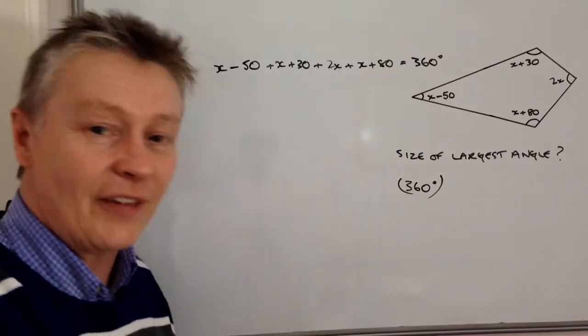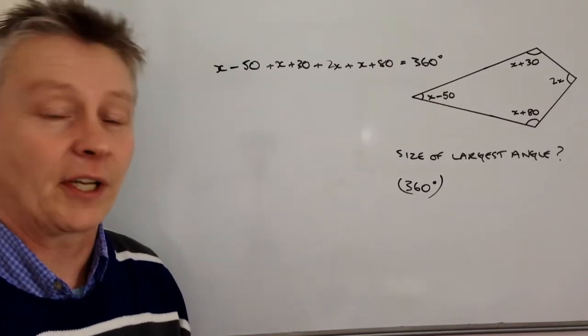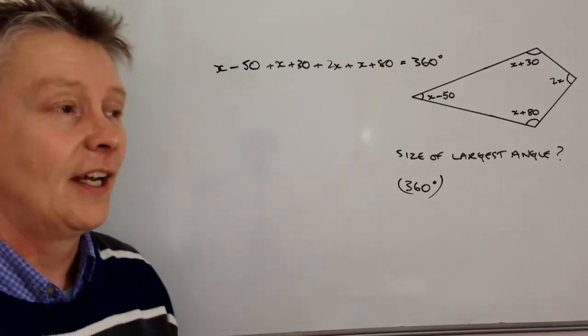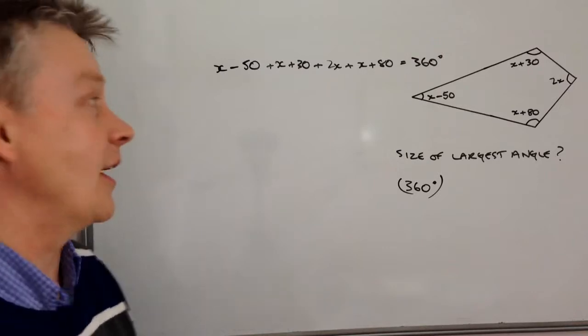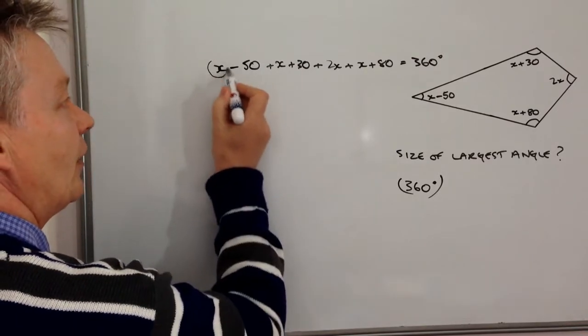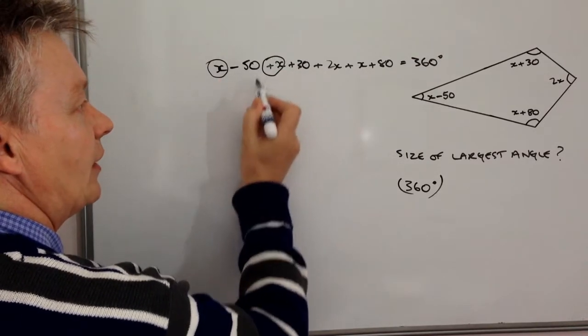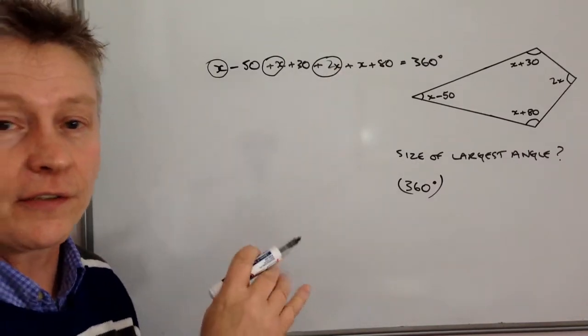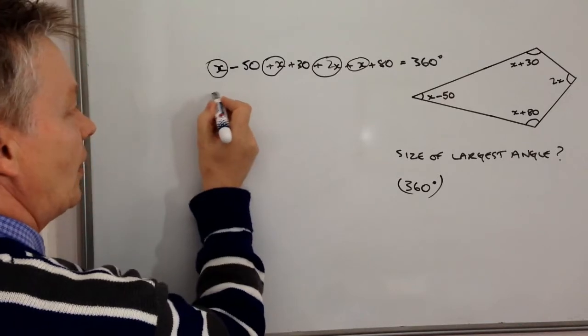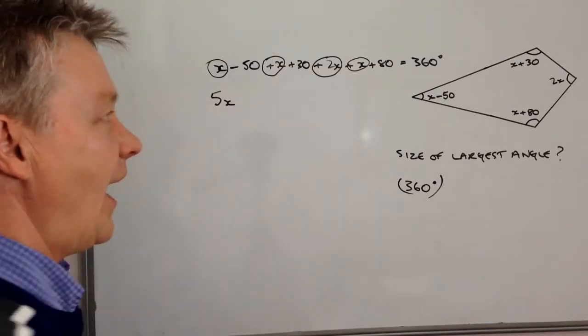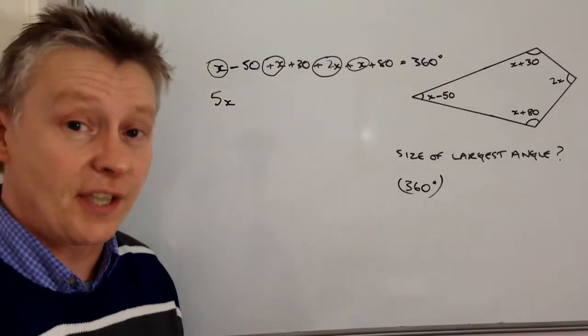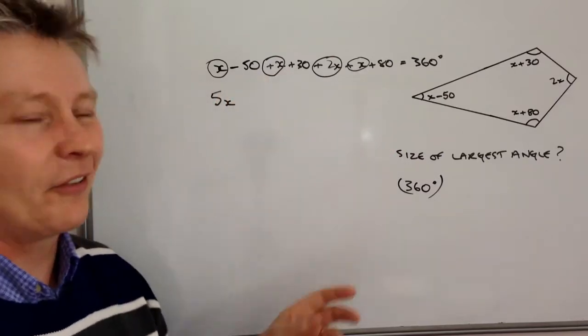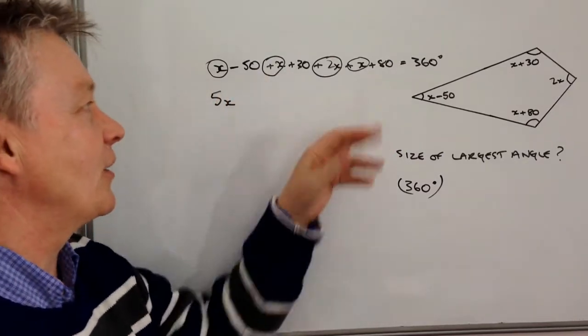So the first thing we're going to do is we're going to gather like terms. We're going to get all the values of X together and all the values of the numbers together. So here we've got one value of X, two values of X, another two, so that's going to be four values of X plus X at the end there. So that's going to work out as 5X. And all we're doing really is just simplifying this rather complicated looking equation.